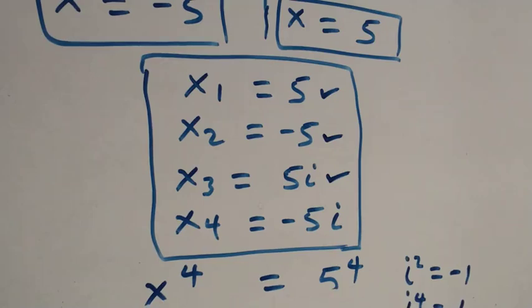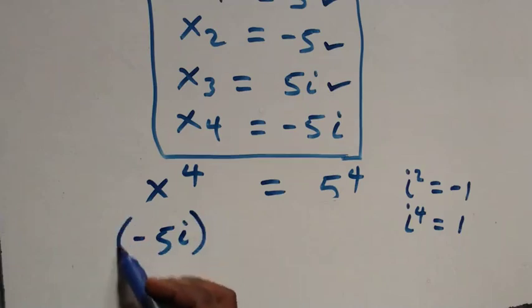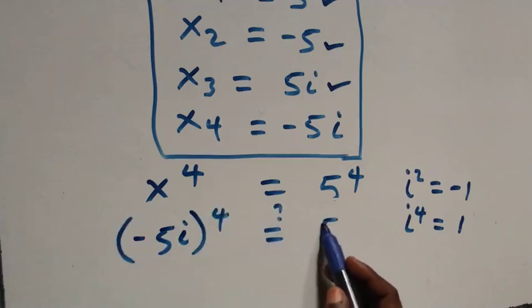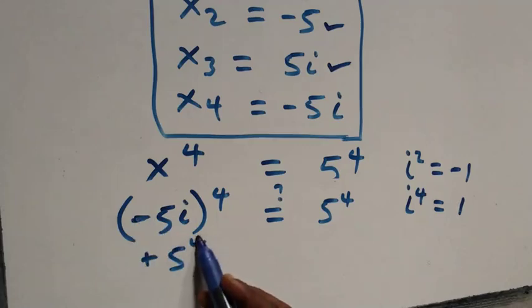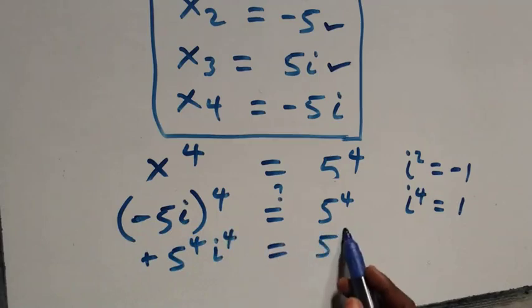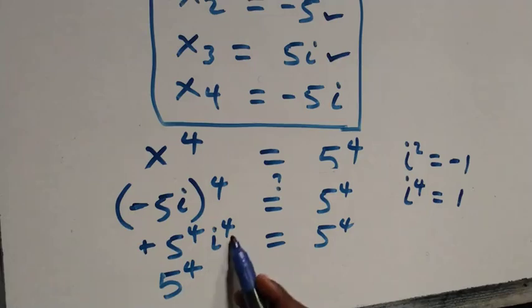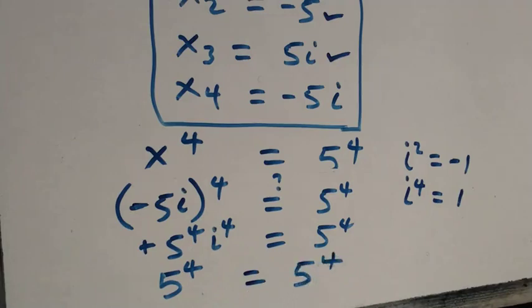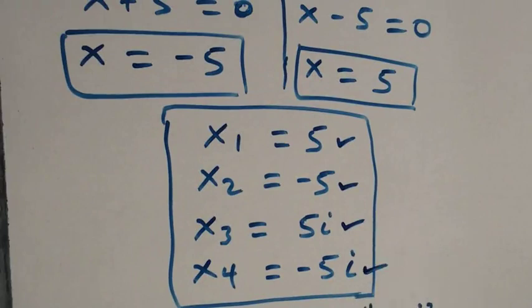Also for minus 5i, this becomes minus 5i raised to the power of 4 is equal to 5 raised to the power of 4. The power of 4 affects minus, making it plus, and we have 5 raised to the power of 4 times i raised to the power of 4 equals 5 raised to the power of 4. Since i raised to the power of 4 is 1, we get 5 raised to the power of 4 equals 5 raised to the power of 4. The left hand side equals the right hand side, so minus 5i also satisfies this problem. Hence we have two real solutions and two complex solutions.